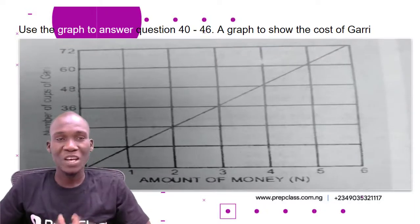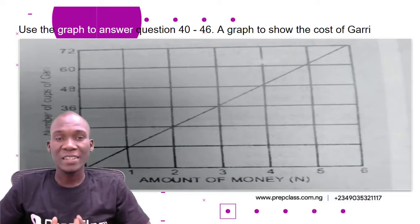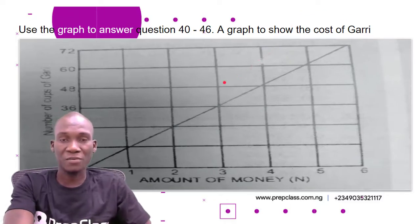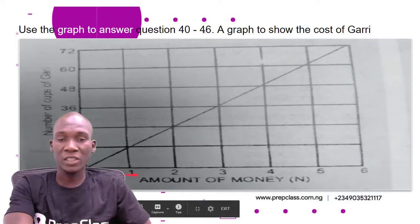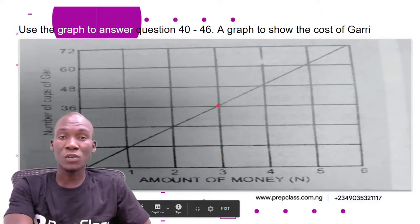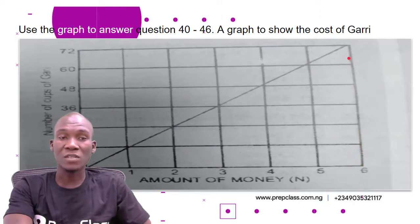We have an information here: use the graph to answer questions 40 to 46 — a graph showing the cost of Garri. We already solved question 40 in our previous video. From this graph, the number of cups of Garri is on the vertical axis and the amount of money (in Naira) is on the horizontal axis. Zero Naira gets no cups, one Naira gets 12 cups, two Naira gets 24 cups, three Naira gets 36 cups, four Naira gets 48 cups, five Naira gets 60 cups, and six Naira gets 72 cups.